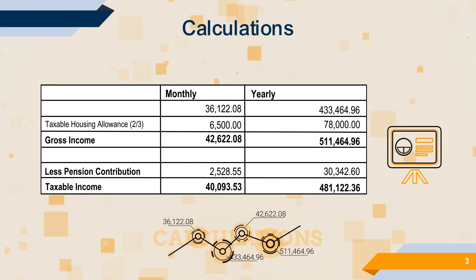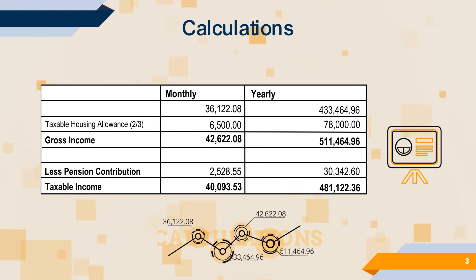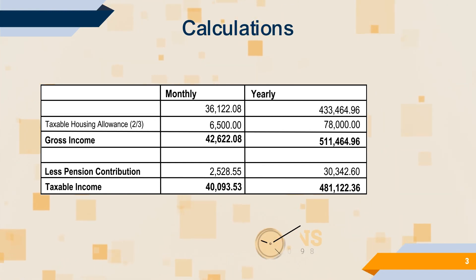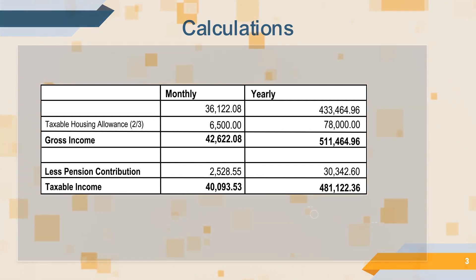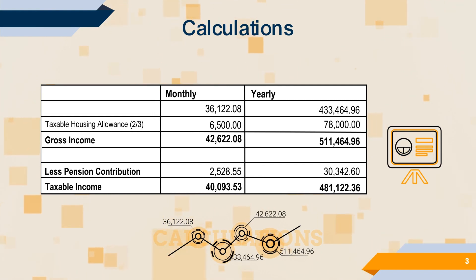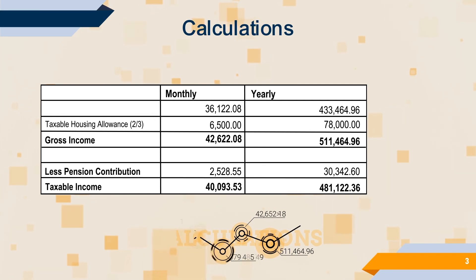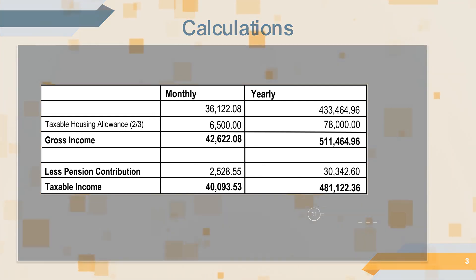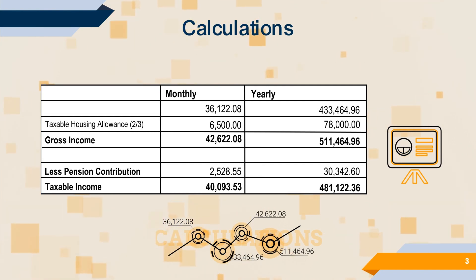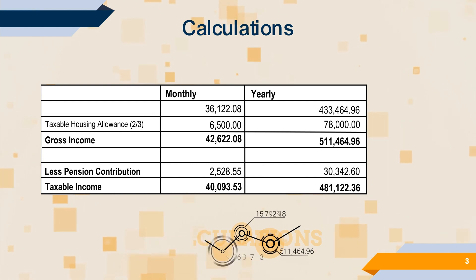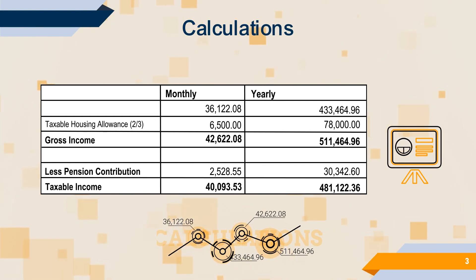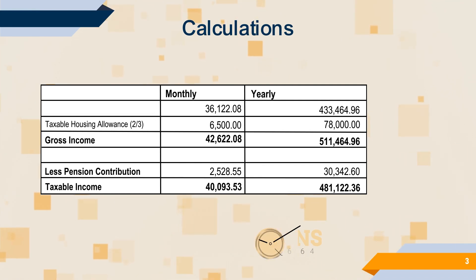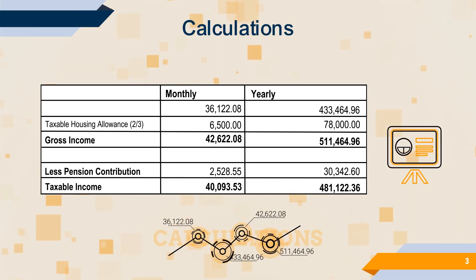Now we want to know what the taxable income per year will be. You take your basic salary of $36,122.08 per month times 12, which gives you $433,464.96. You then take your taxable housing allowance of $6,500 per month times 12, which gives you $78,000. Your gross income per year is therefore $511,464.96.